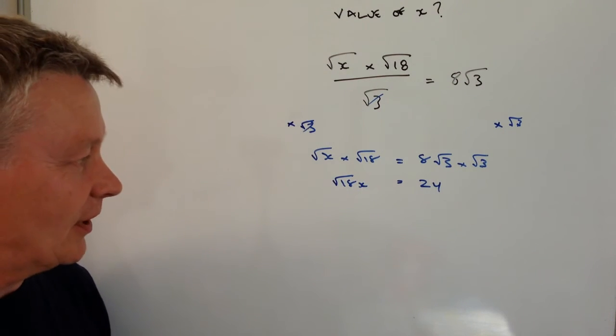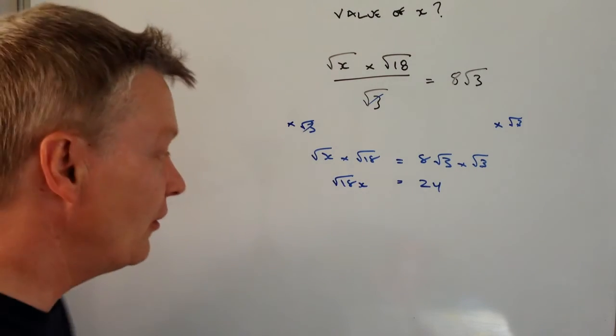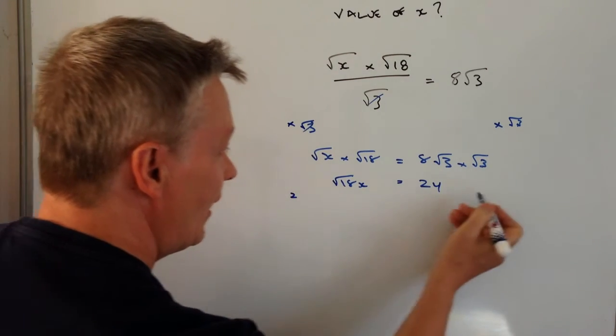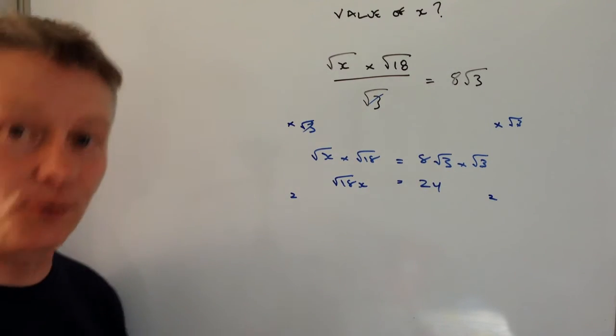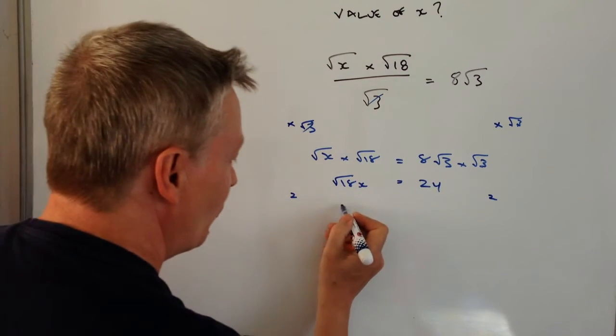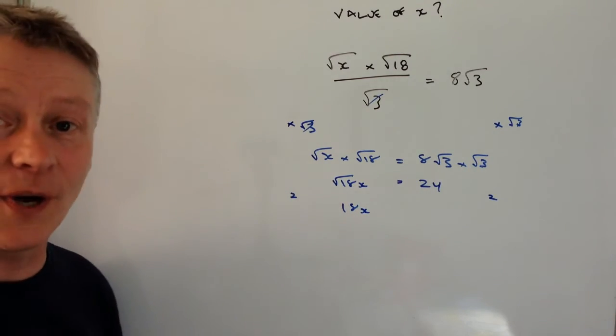Alright, well the best way of dealing that now is to get rid of this root sign. So what I'm going to do is I'm going to square both sides of the equation because if I square a square root, I end up with a value of 18x. So I just kind of lose that square sign.